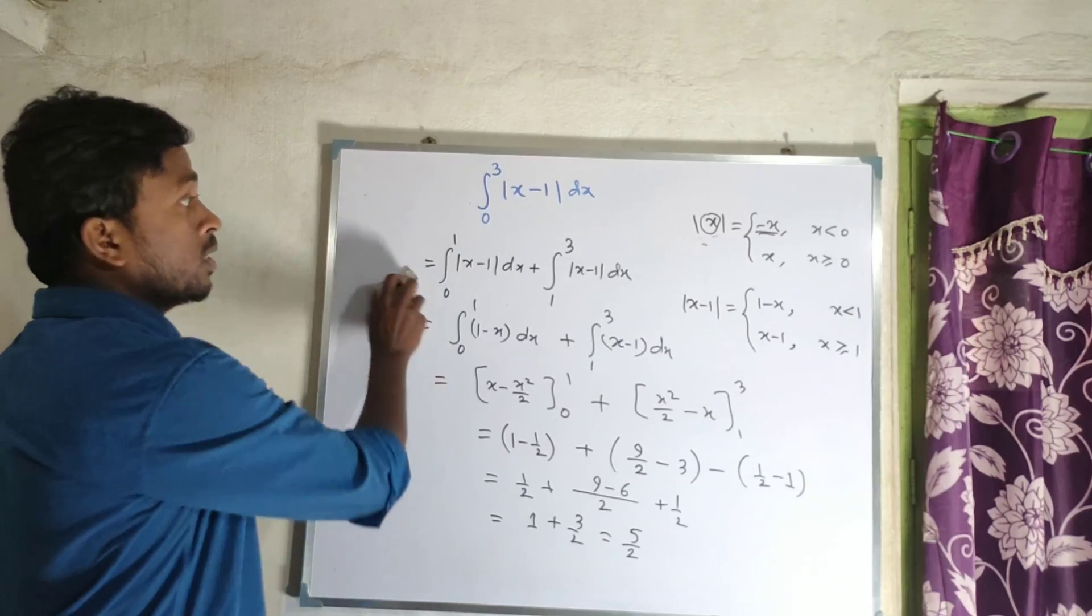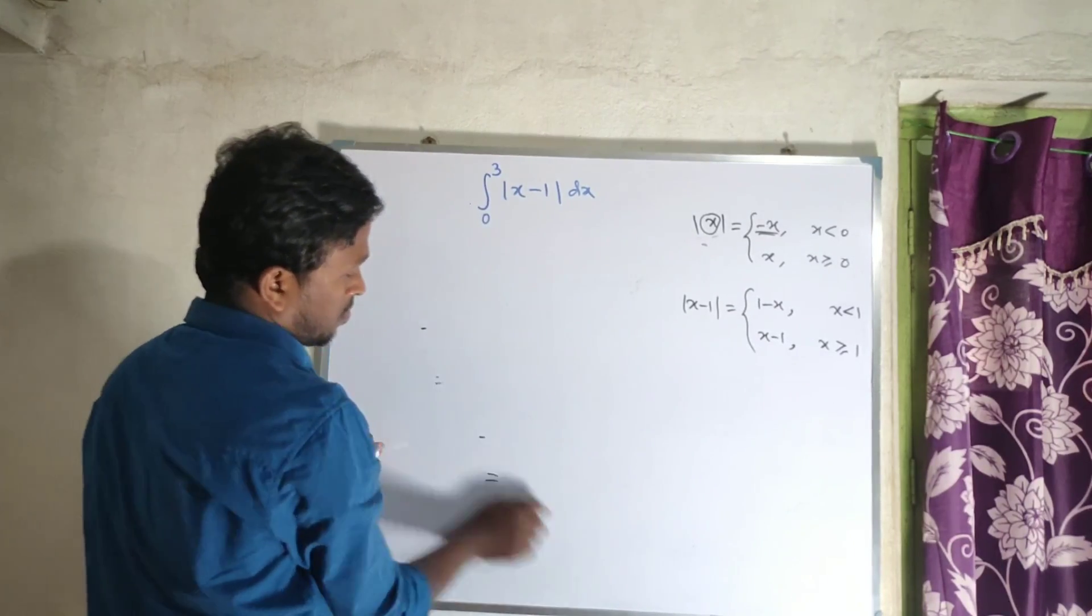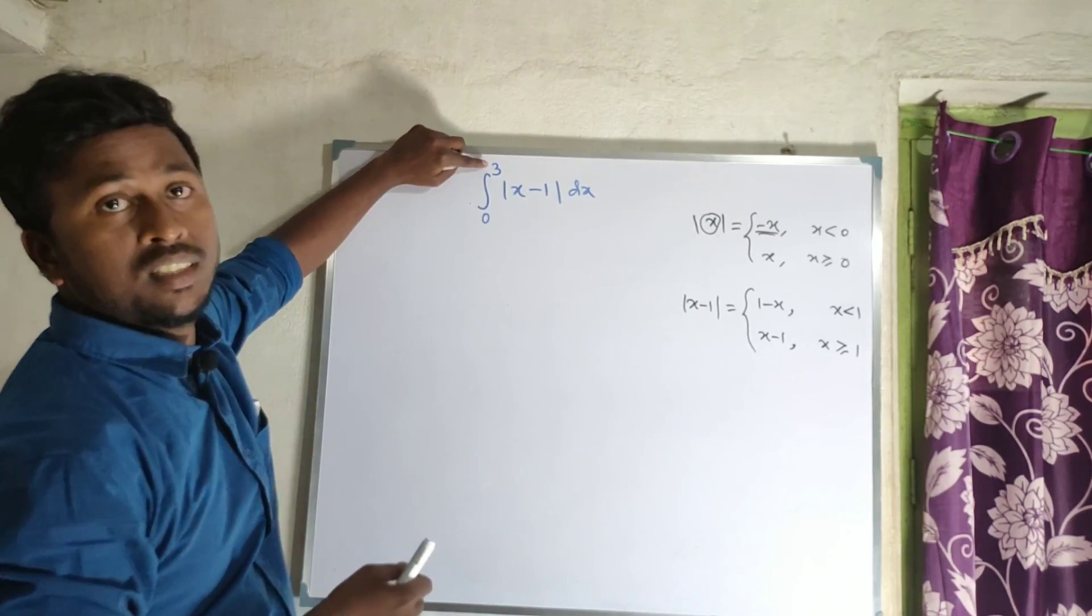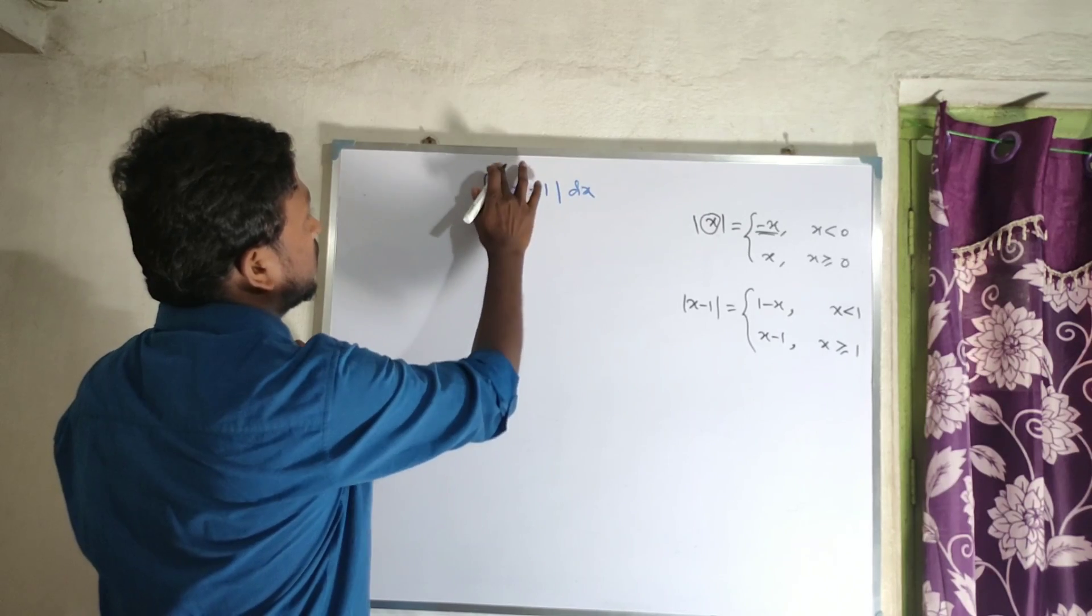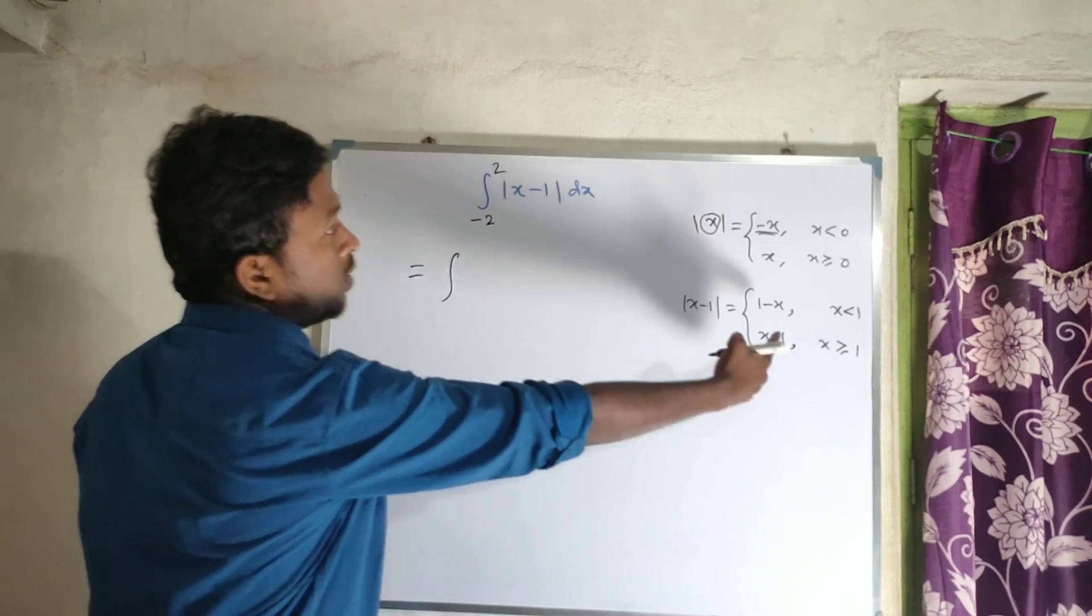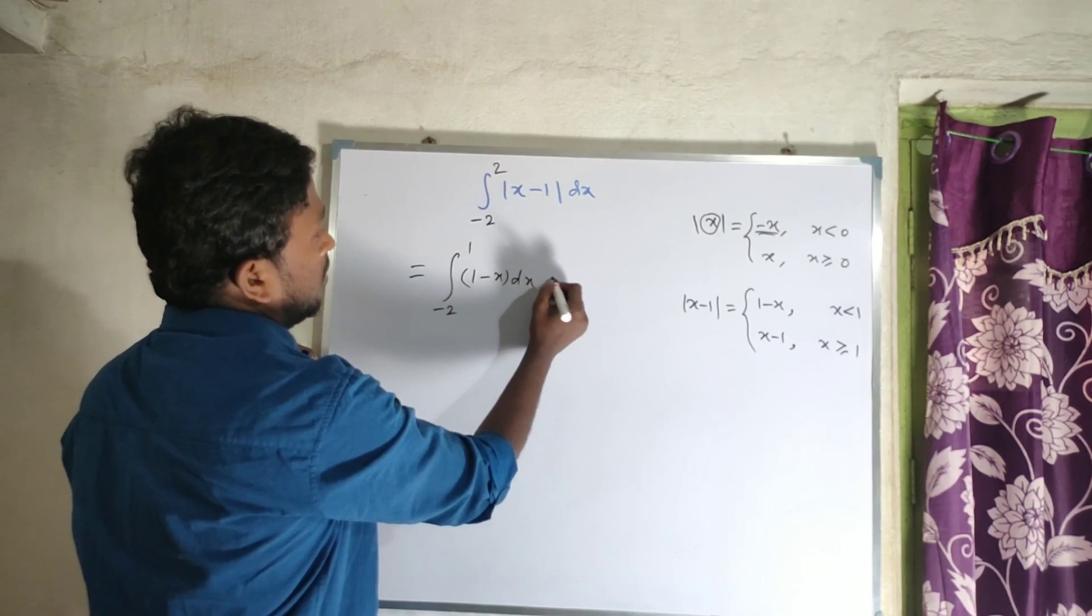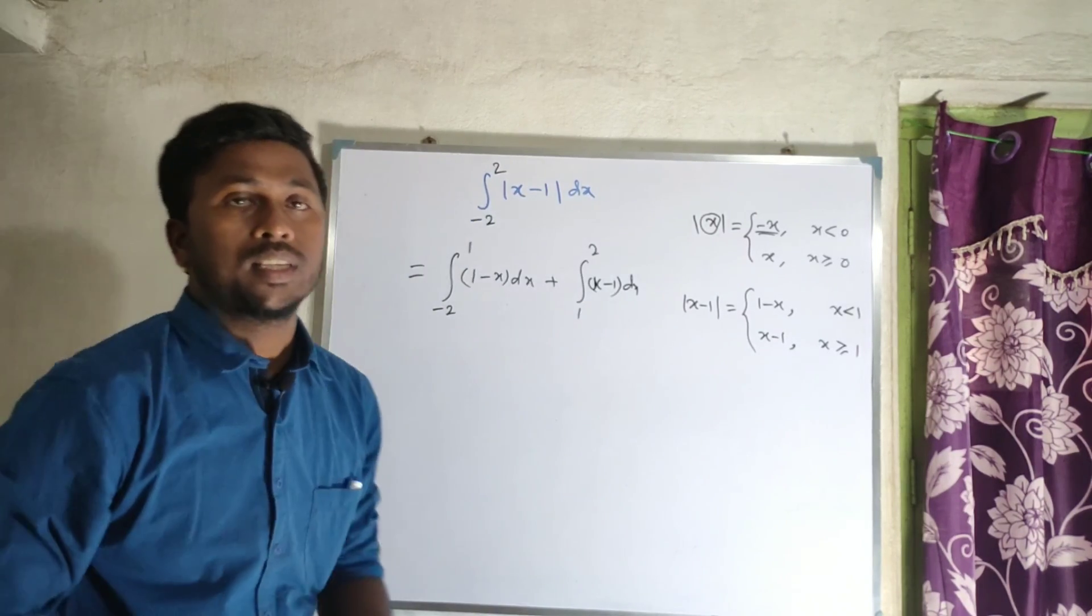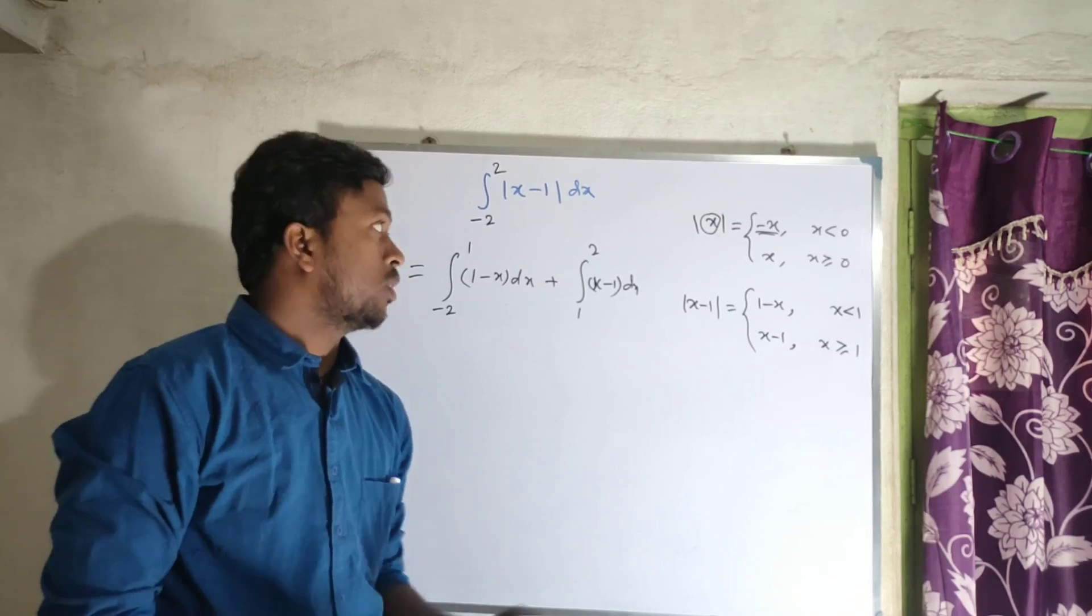The second problem: suppose the limit is changed from minus 2 to 2. Similarly, you'll find the breakpoint and split the integral from minus 2 to 1 of one minus x dx plus 1 to 2 of x minus one dx. The integration process is similar. That's all for this problem. Thank you for watching this video.